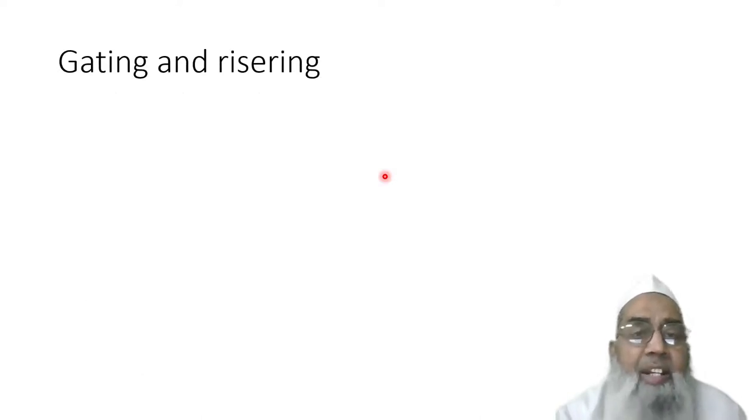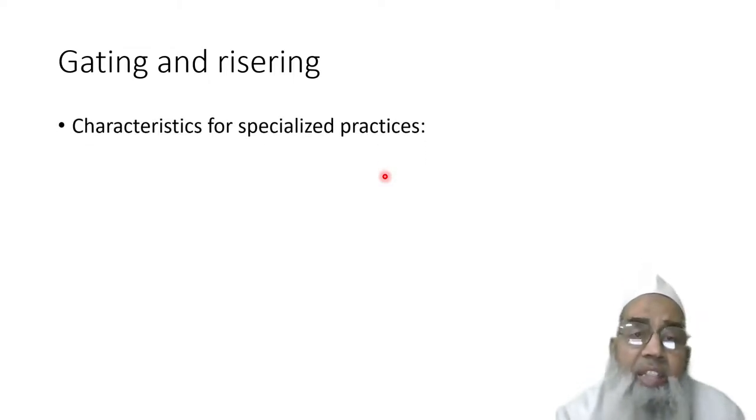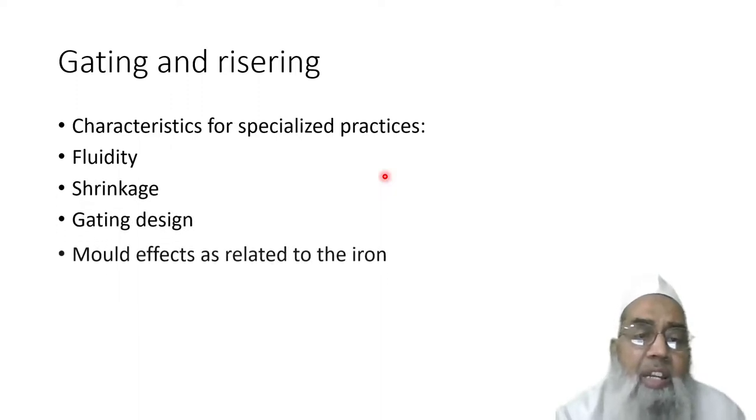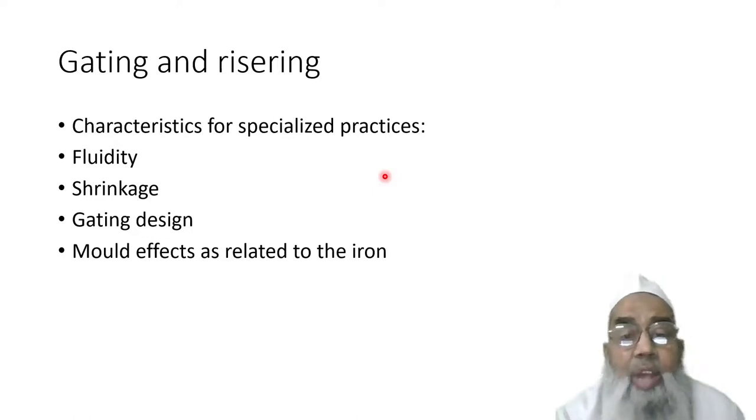Gating and risering: because the molten temperature is very high, it is to be properly taken care of. Characteristics for specialized practices include fluidity, shrinkage, gating design, mold effects, and effects related to the iron.